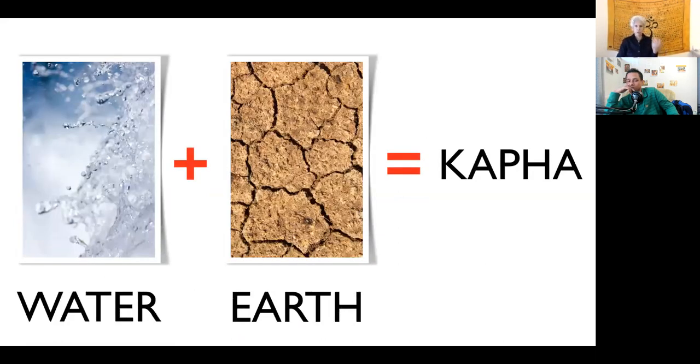Let's go through the doshas. I'm going to start with the heavier elements, going in tune with how when you're born as a baby, even when you're formed in the embryo, you're first water. When babies are born, you're just like these fluid little balls of earth. So water and earth together is kapha.